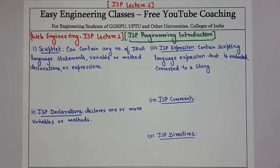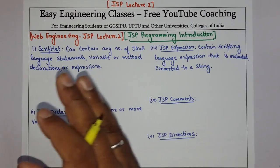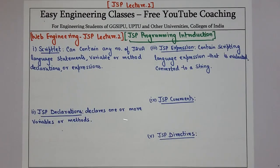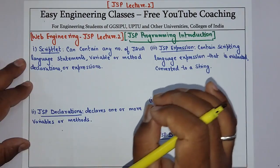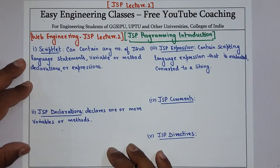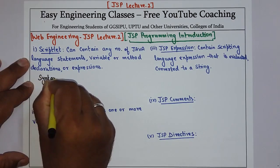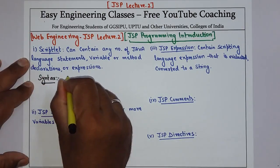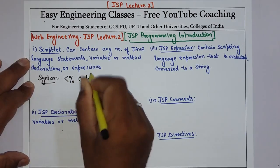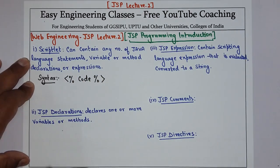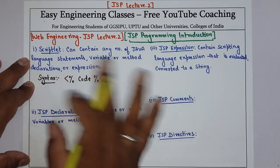Starting with this, first is scriptlet. A scriptlet contains any number of Java language statements, variables or method declarations, or expressions. The syntax of a scriptlet is: opening bracket, then percent sign, your code, then percent sign and closing bracket. So in this we can contain any number of Java language statements, variables or method declarations.